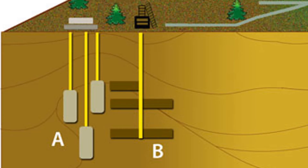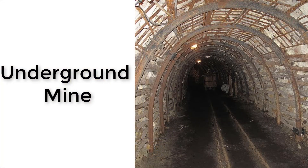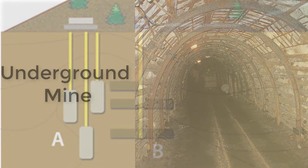B represents underground mines. These are abandoned mines that are deep enough down and covered by a layer of non-porous rock, which means you can pump gas into them and use them as storage vessels.